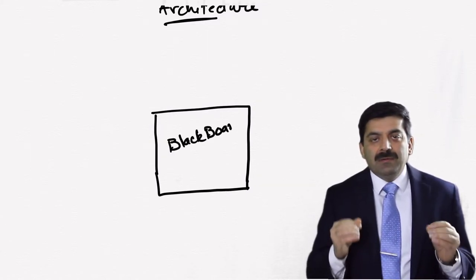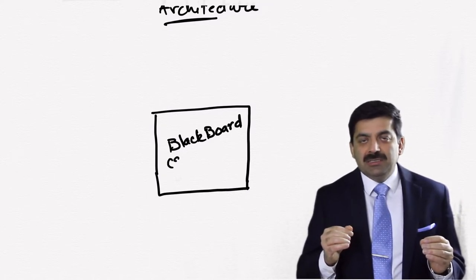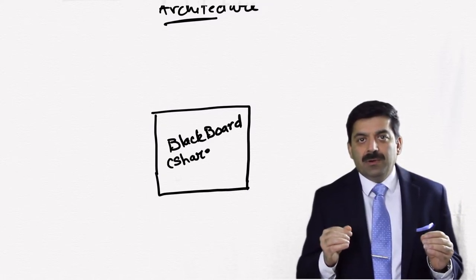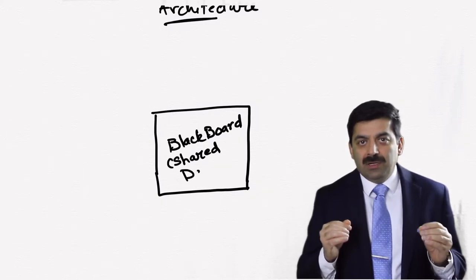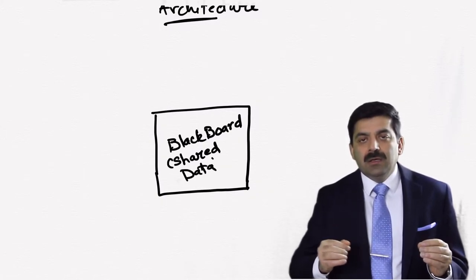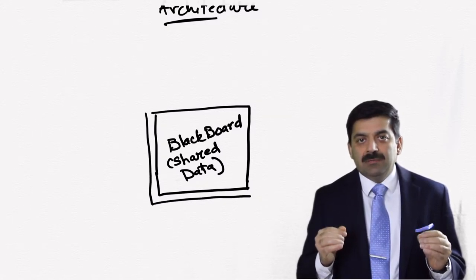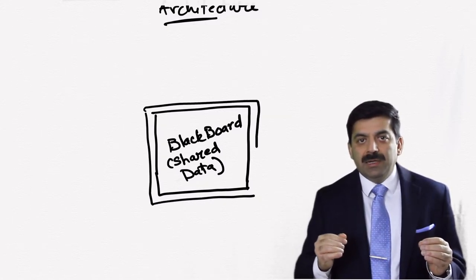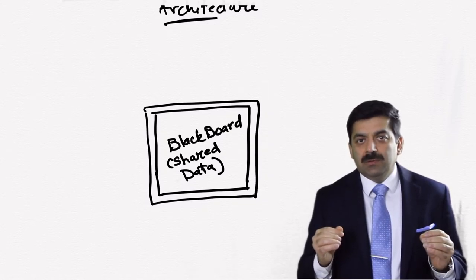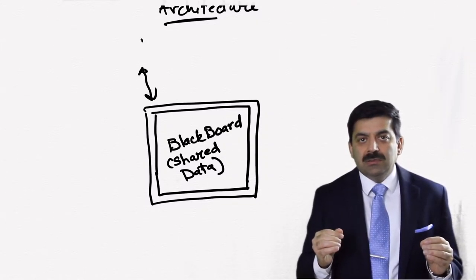Whenever some data state changes it may trigger other components called knowledge sources. Generally in this kind of systems there is one blackboard component and multiple knowledge sources components.